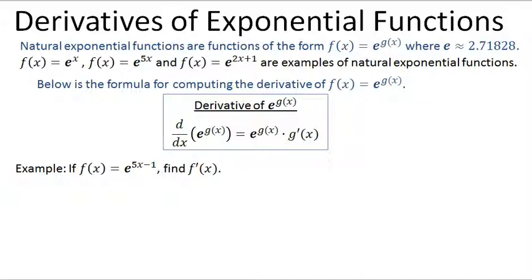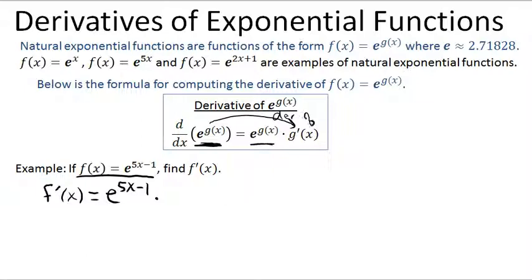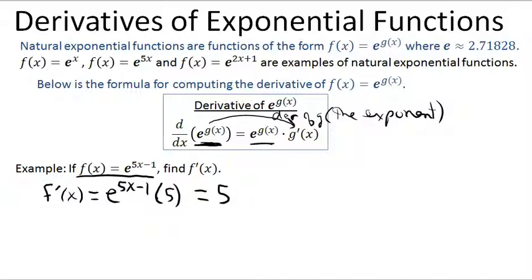For example, suppose we find the derivative of f of x equals e to the 5x minus 1. Applying the derivative formula, you take the exact exponential — e to the 5x minus 1 — and multiply it by the derivative of the exponent. The derivative of 5x minus 1 is simply 5. So f prime of x equals 5 e to the 5x minus 1. Simple!